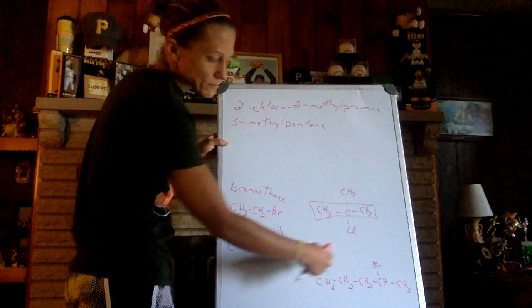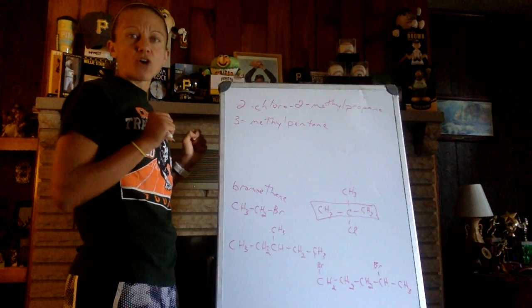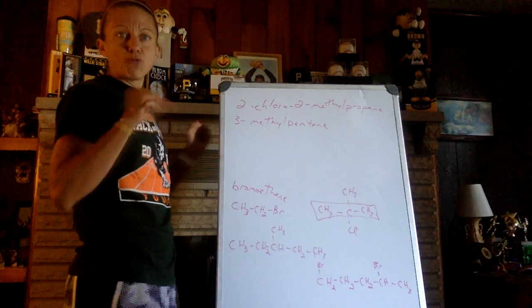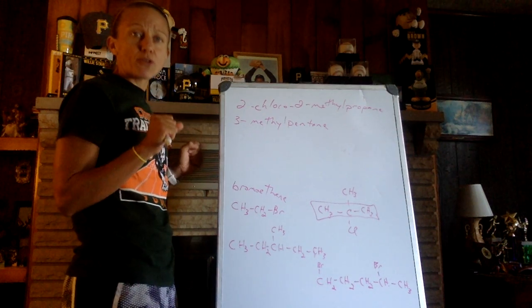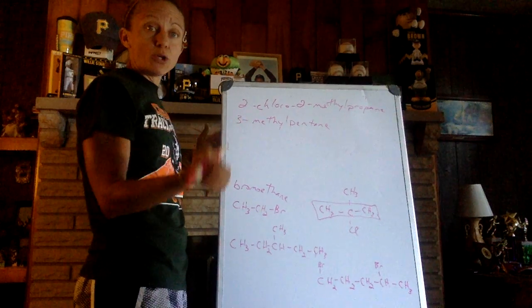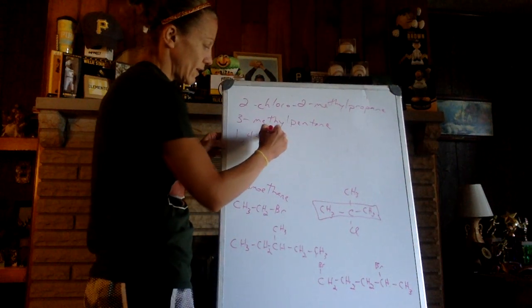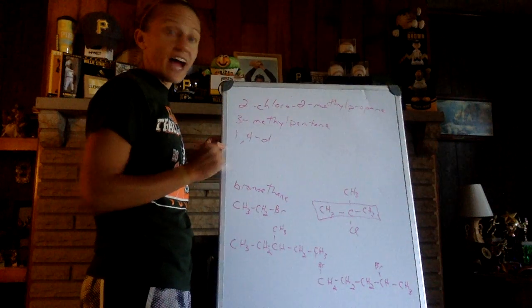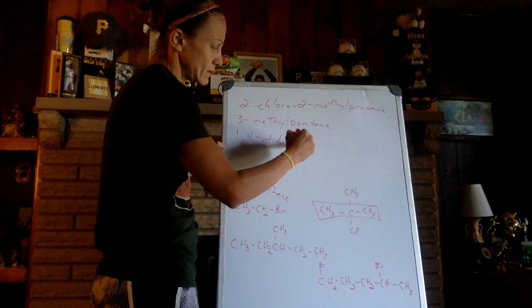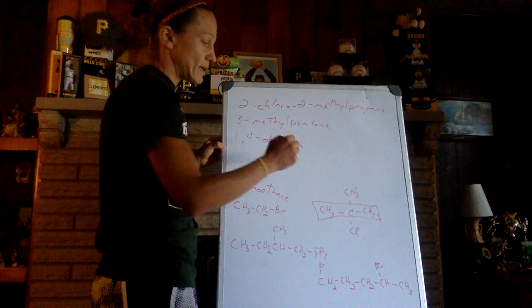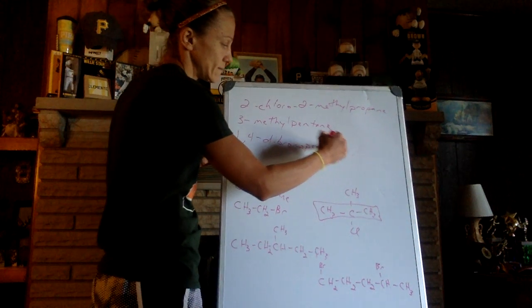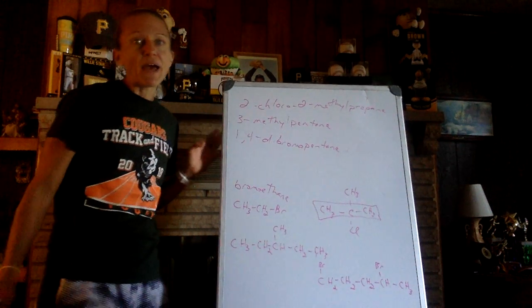Next one, two bromines, one on the first carbon and one on the fourth carbon of another pentane. So use both numbers. They're on one and four. There are two of them, so di- is a bromine, so dibromo. And my longest chain gives me pentane.